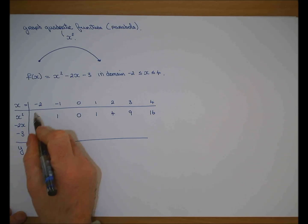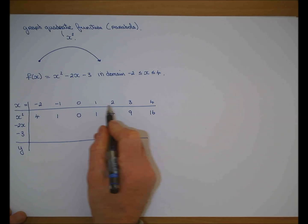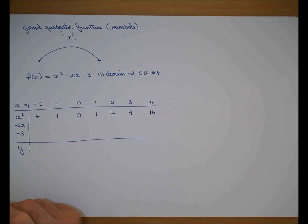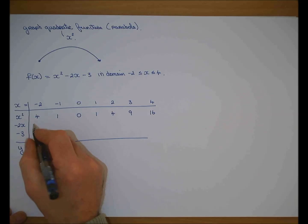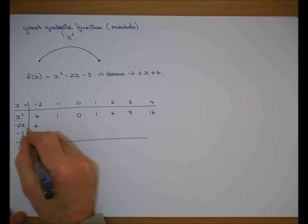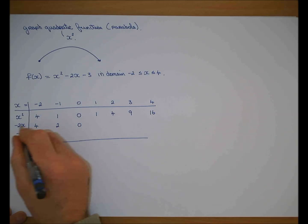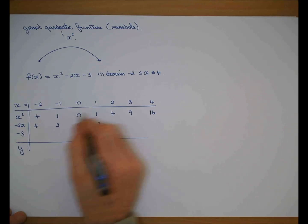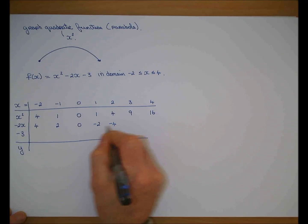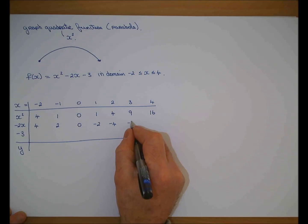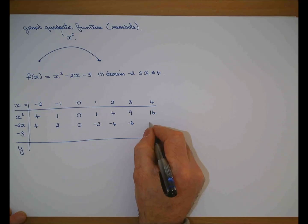Minus 2x means you multiply each of those x values by minus 2. Minus 2 by minus 2 is 4. Minus 2 by minus 1 is 2. Minus 2 by 0 is 0. Minus 2 by 1 is minus 2. Minus 2 by 2 is minus 4. Minus 2 by 3 is minus 6. Minus 2 by 4 is minus 8.